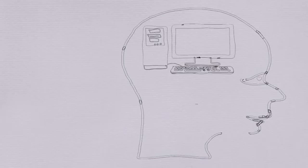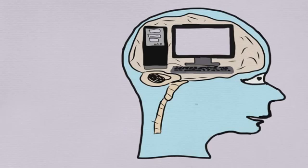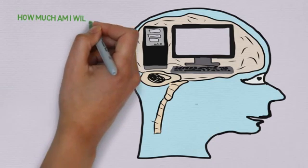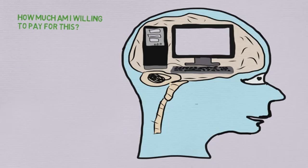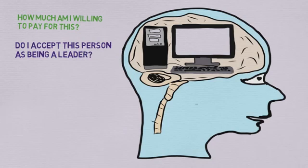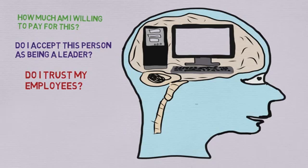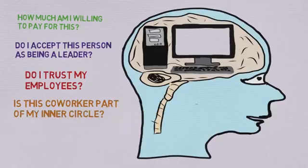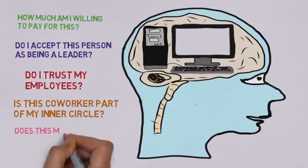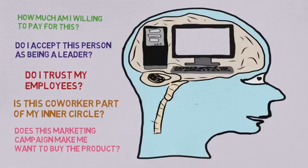When at work or conducting business, our brain processes information related to key business problems such as: How much am I willing to pay for this good or service? Do I accept my manager as being my leader? Do I trust my employees? Who are the co-workers who are part of my inner circle? And does this marketing campaign make me want to buy the product?